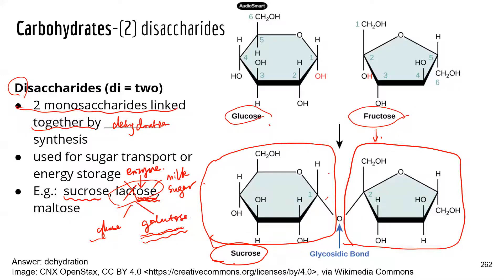There are products available for people who are lactose intolerant — those products either have the enzyme added, or the lactose has been removed, so lactose-intolerant people can enjoy them. Maltose is another common disaccharide example: when we digest starch in our mouth, the amylase in our saliva digests starch into the disaccharide maltose first.